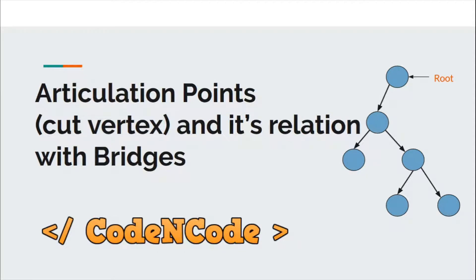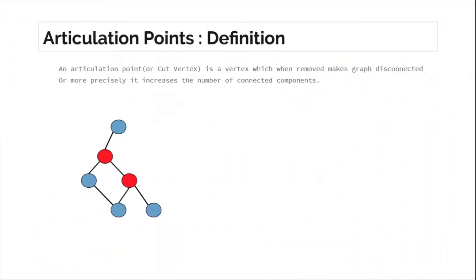Hello guys, this is Code and Code and this is the twelfth lecture of this Graph Theory series part 1. In this lecture we are going to study about articulation points or cut vertices and the relation of articulation points with bridges. Since we have studied bridges in the previous lecture we have knowledge about that. The definition of articulation point: a cut vertex is a vertex which when removed makes the graph disconnected, or more precisely it increases the number of connected components. The definition of cut edges and cut vertices matches at a certain level.